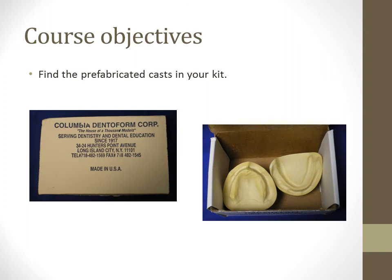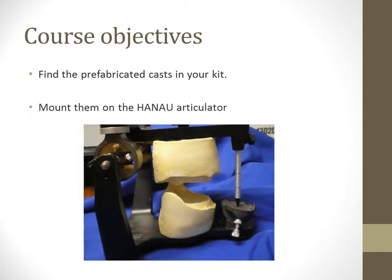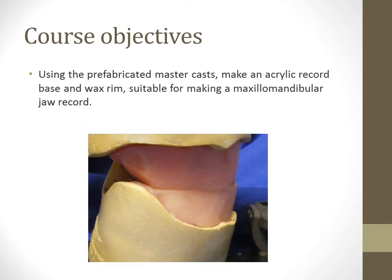Find the prefabricated casts in your kit. Mount them on the Hanau articulator. Using the prefabricated master casts, make an acrylic record base and wax rim suitable for making a maximum mandibular jaw-relation record.